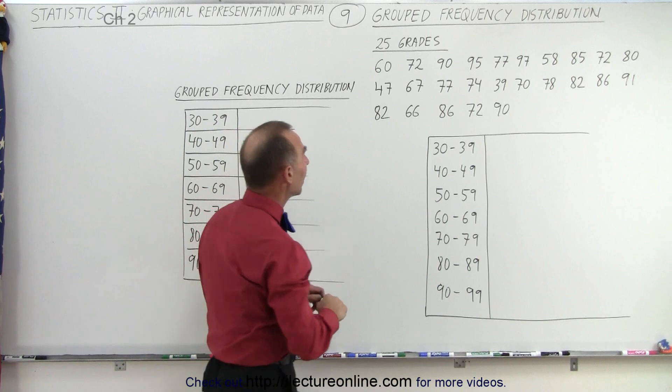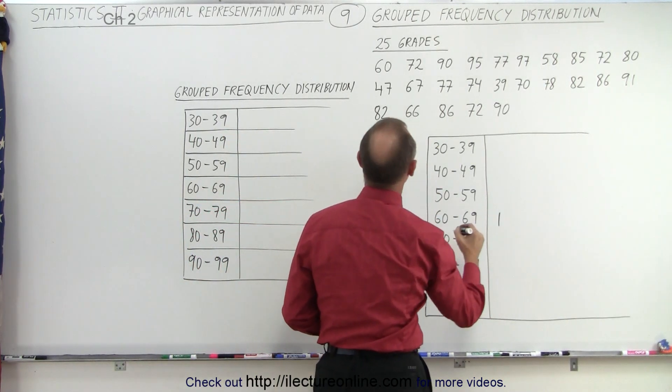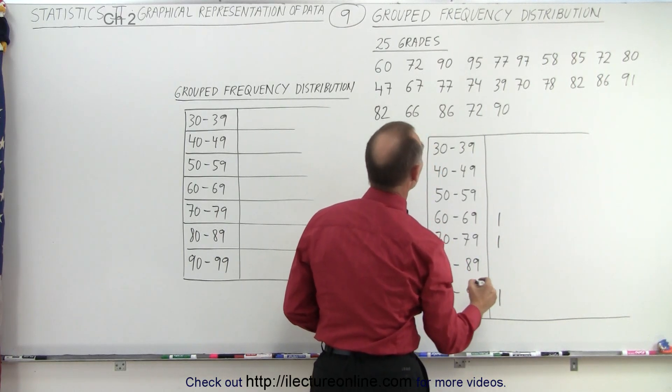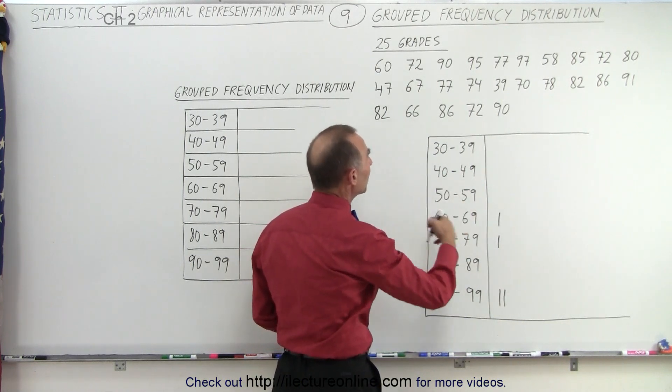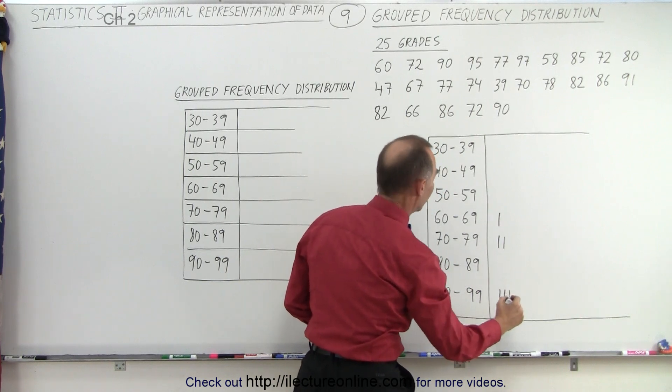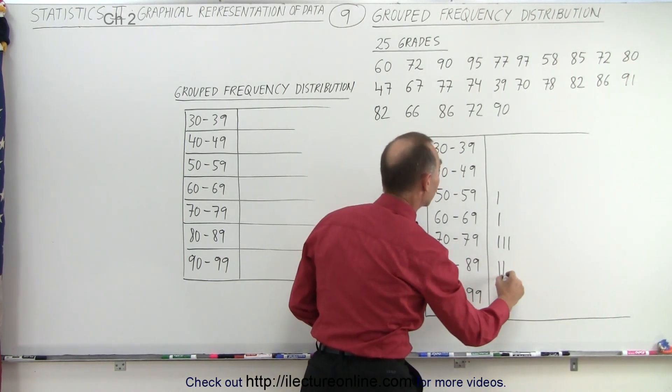So let's take a look here. When we have the number 60, that falls in this group, so put a line there. 72, put a line there. 90, 95, and you see we do the same pattern as before, but now we have to group them in a particular group. 77, 97, 58, 85, 72, 80. Second row here, 47...